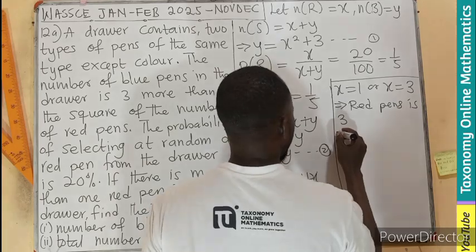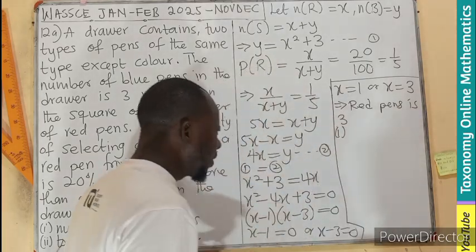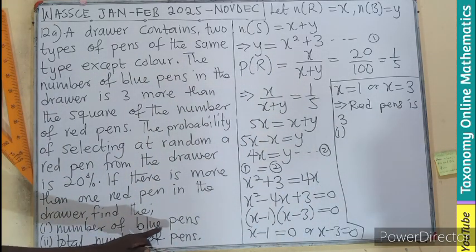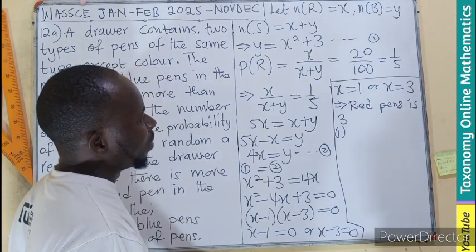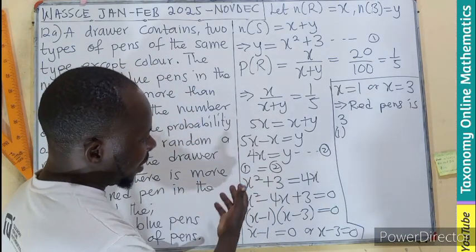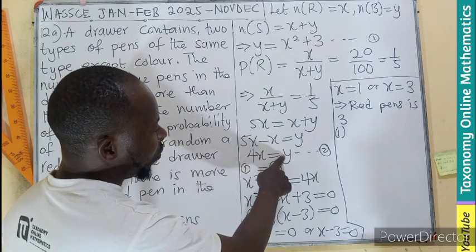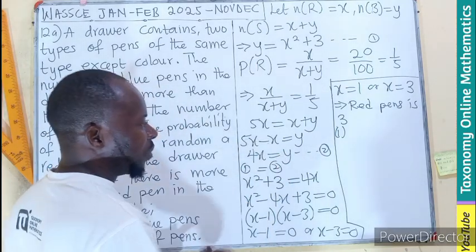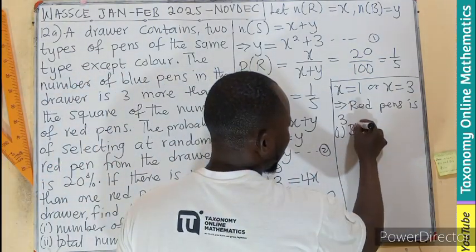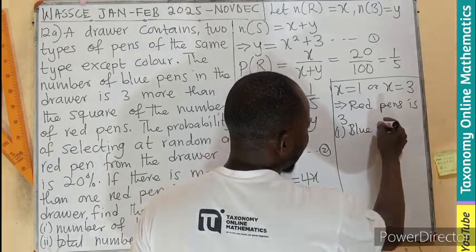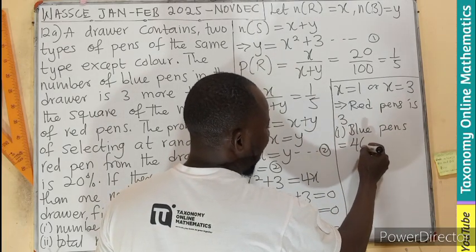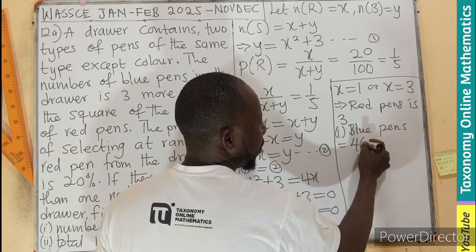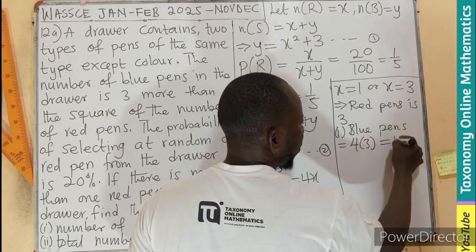Then let's go to part i. Part i is asking for number of blue pens. How do I get that? The number of blue pens. We can pick it from any of the equations. We have Y here. So we can say that blue pens will be equals to 4 times X. And 4 times 3. And that will give us 12 pens.